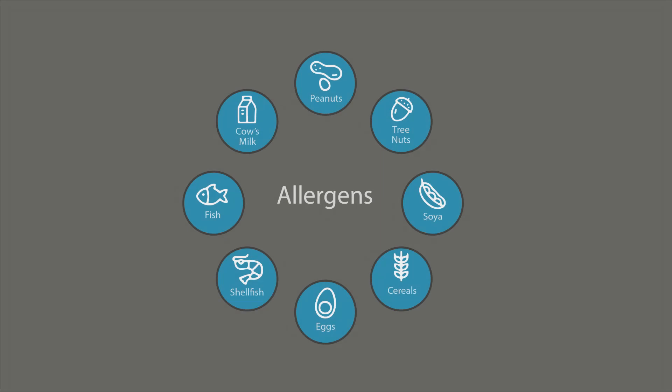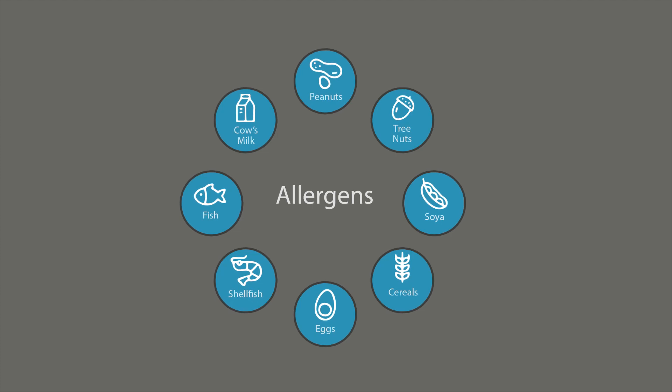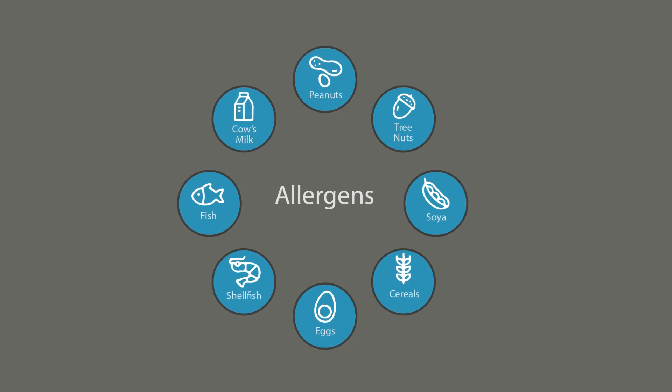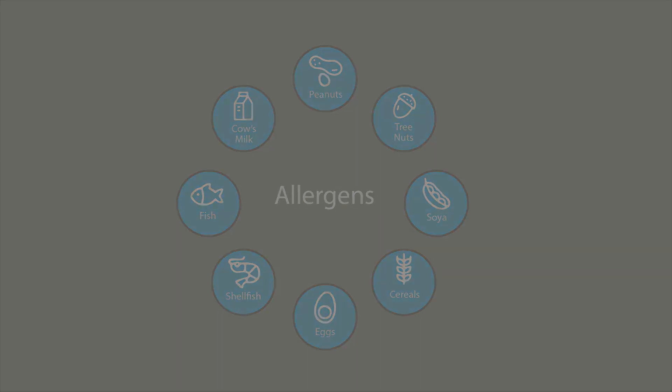Although an individual can potentially react to any food that contains protein, 90% of food allergic individuals react to one or more of a common list of foods, often referred to as the big eight. These foods are recognised as major allergens by Codex and are: cereals containing gluten (which is wheat, rye, barley, oats and spelt), crustacean, egg, fish, peanut, soybeans, milk and tree nuts.